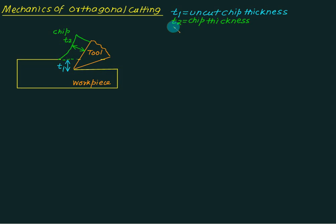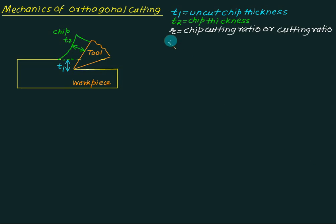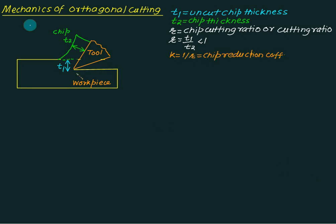So t2 is the chip thickness at this point. We define here one ratio called the chip cutting ratio or cutting ratio. This cutting ratio is defined as the ratio of t1 by t2. Here t1 is always less than t2, so this ratio is always less than unity. The term k, defined as the reciprocal of the chip thickness ratio, is called the chip reduction coefficient.